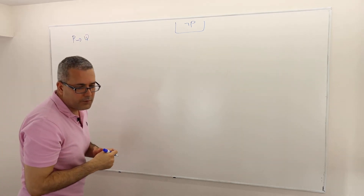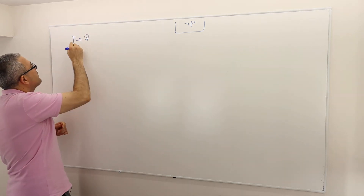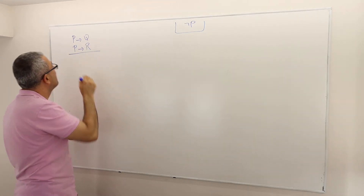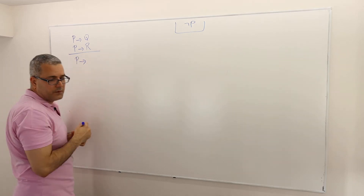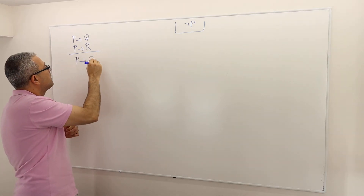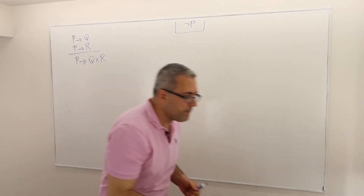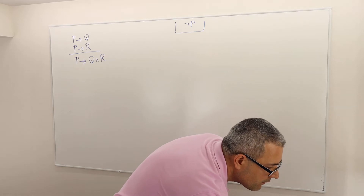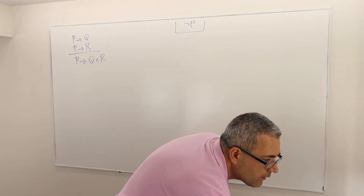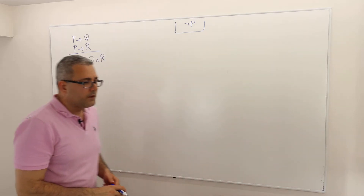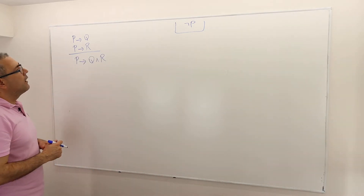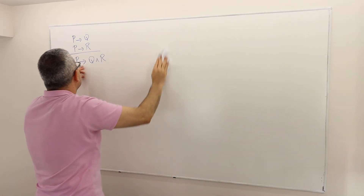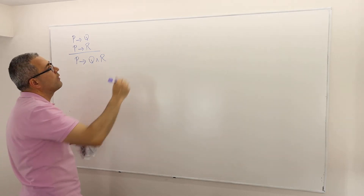The first premise is P implies Q, the second premise is P implies R, and then the conclusion is P implies Q and R. So how do we prove this argument? The conclusion is a conditional statement, and I want to prove it.